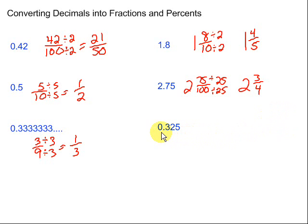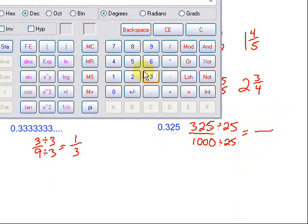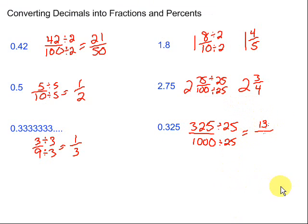Last one here, 0.325. Okay, tenths, hundredths, thousandths. So this would be 325 thousandths. Sounds like a fraction to me. 325 over 1,000. Let's see, we can divide that by 25, top and bottom. Not sure what that is, so let's pull out the handy dandy calculator. 325 divided by 25 gives us 13, and 1,000 divided by 25 gives us 40. Thirteen over 40. Can't simplify that, so we're done. We've converted all of our decimals into fractions.